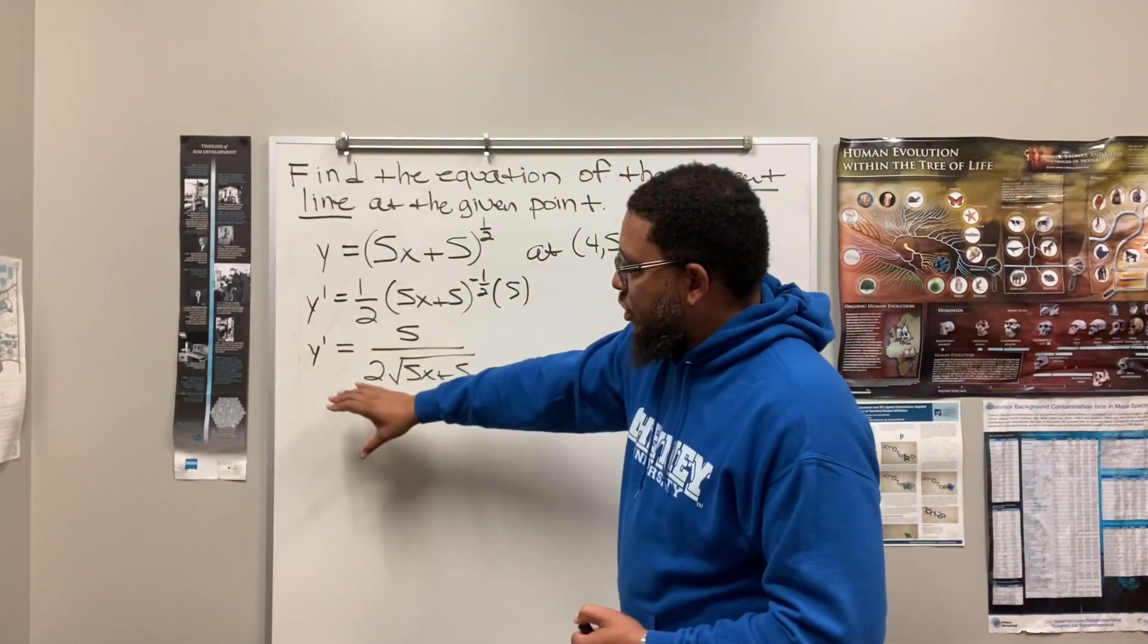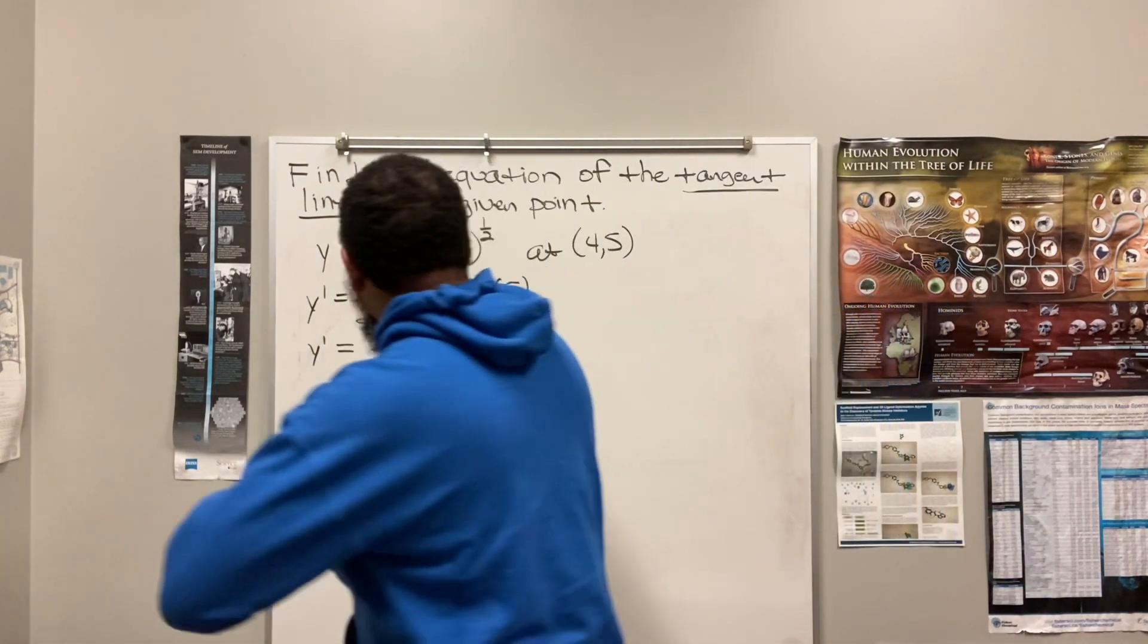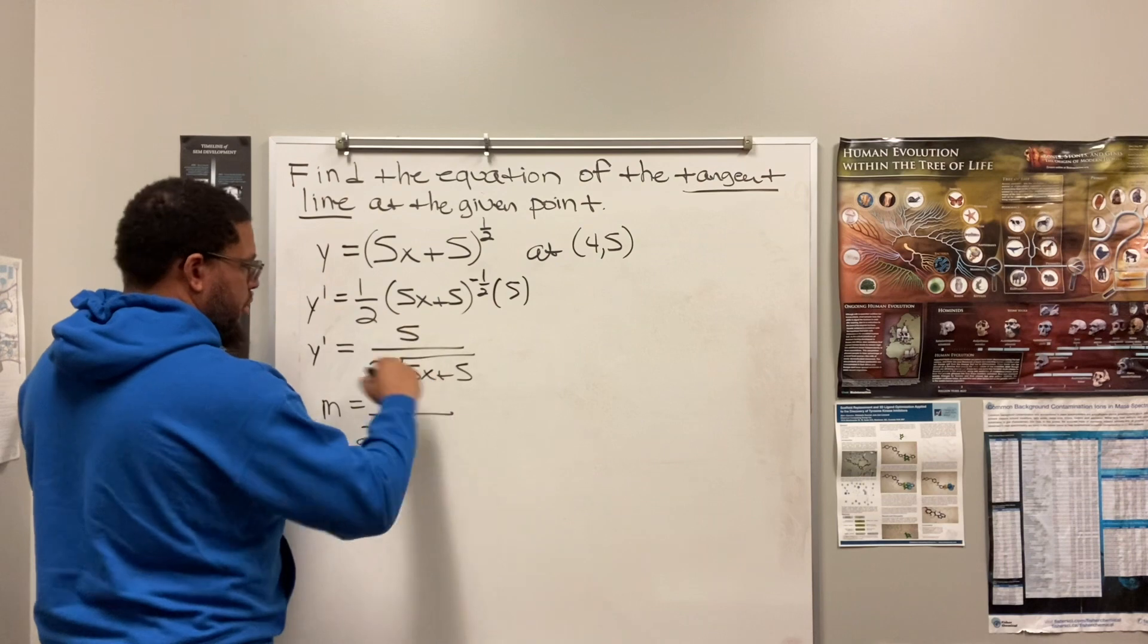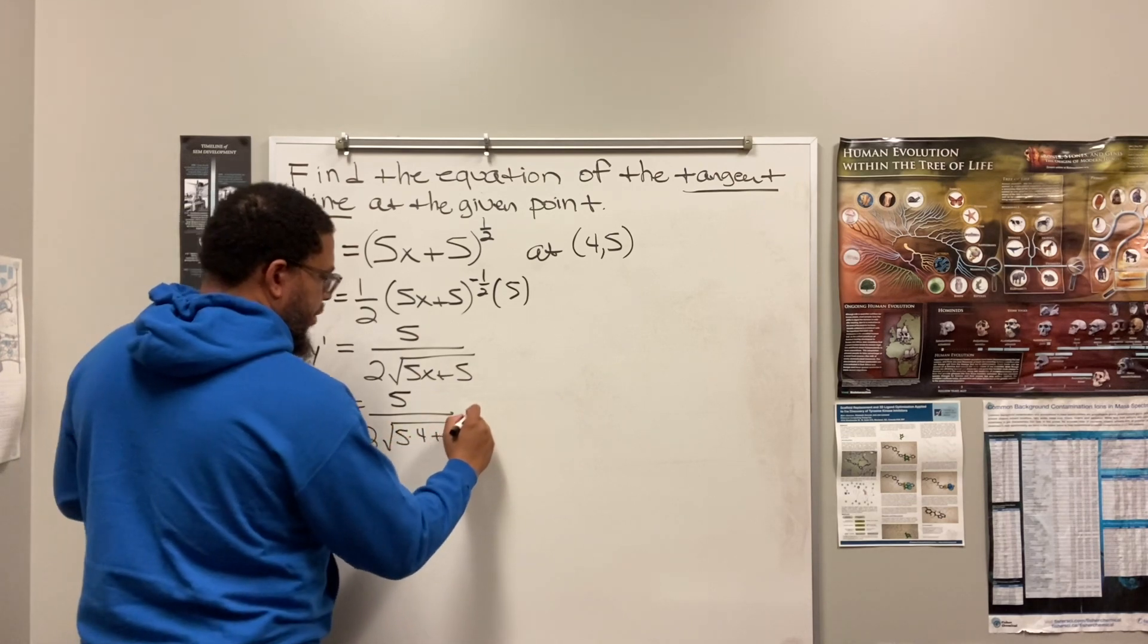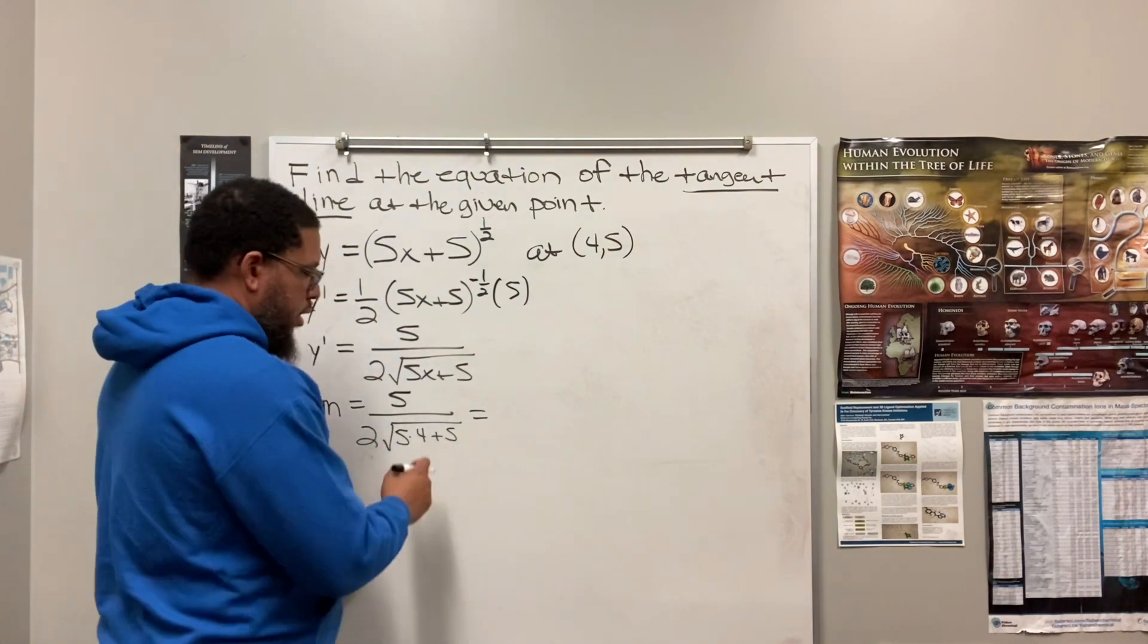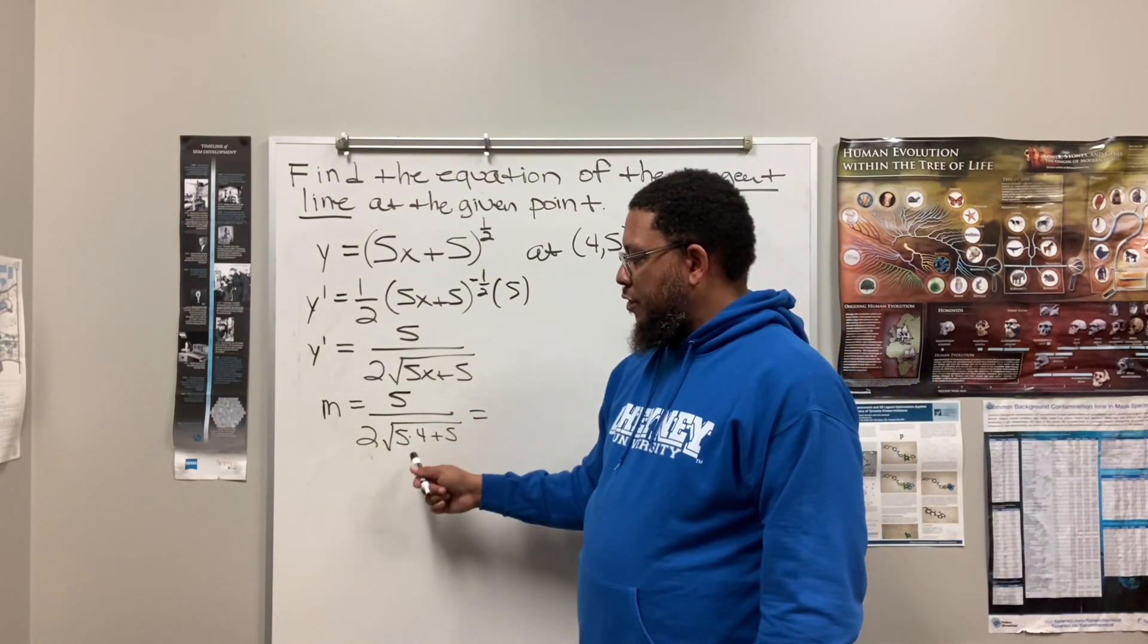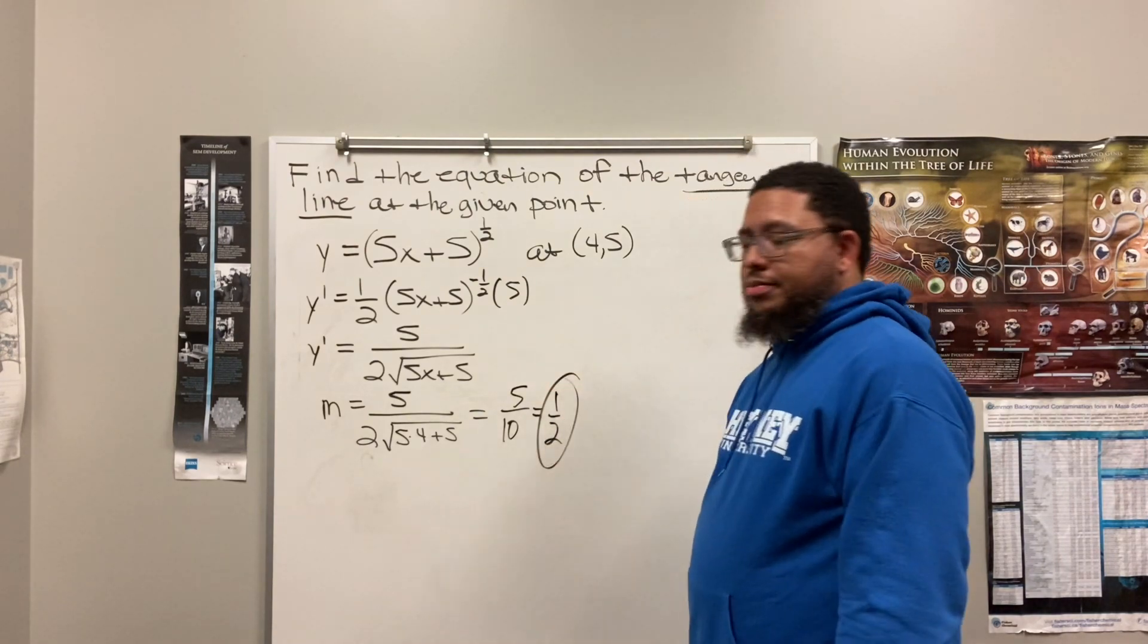All right, so anyway, now we got the derivative. This is our derivative, 5 over 2 times the root of 5x plus 5. Now, second step, we're going to find the slope. So in order to find the slope, we take the x value, and I'm going to call the slope m. We take the x value and replace any x in this derivative with the x value of 4 because it's 4. So I got 5 times 4 plus 5. This is going to work out nice and neat. Watch. So we treat the radical sign kind of like parentheses. So in the parentheses, we still follow the order of operations. Multiply before we add. So 5 times 4 is 20. 20 plus 5 is 25. What's the square root of 25? 5. What's 2 times 5? 10. So now we got 5 over 10. And what's 5 over 10 reduced? 1 half. Boom. There you go. 1 half. Nice and neat.